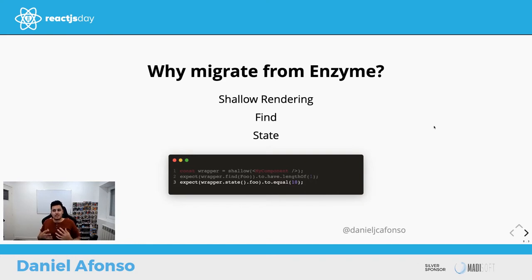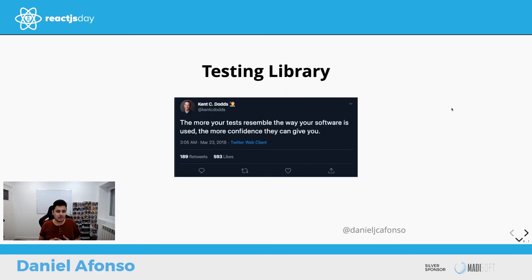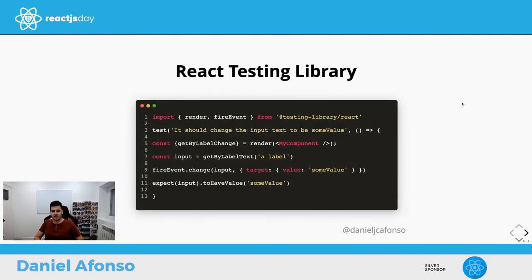The reason for moving out of Enzyme was the Testing Library and its main guideline: 'The more your tests resemble the way your software is used, the more confidence they can give you.' This is a tweet by Kent C. Dodds, who created the DOM Testing Library, which the React Testing Library is built upon. I'll give you a guide to everything you might need to use it.